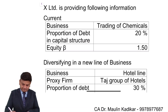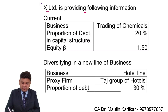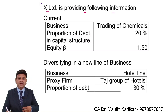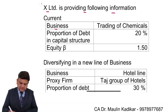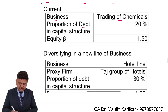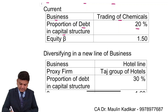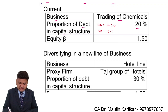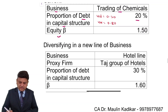Let us see the next question. X Limited is providing following information. Currently X Limited is doing business of trading of chemicals. The proportion of debt financing in the capital structure is 20%, that is weight of debt is 0.20 and weight of equity is 0.80. Beta of equity is given as 1.5.